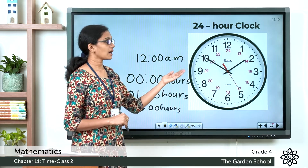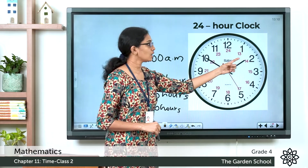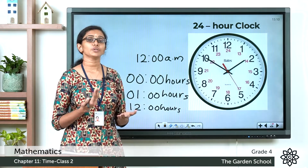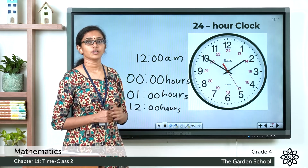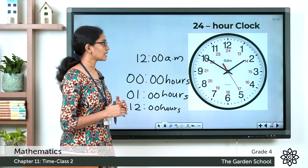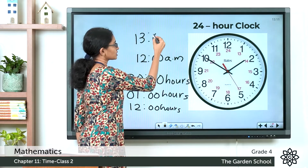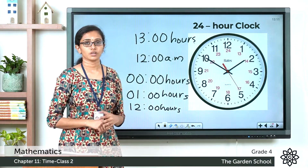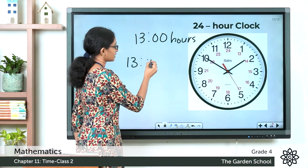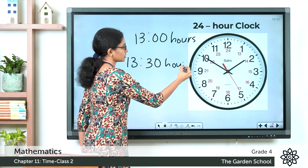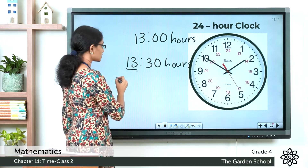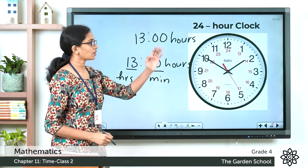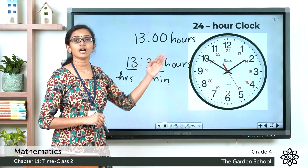After 12 noon, we count the hours as 13, 14, 15, 16 and so on till 24. So how would you represent 1 o'clock in the afternoon on a 24-hour clock system? It will be represented as 1300 hours. If it is 1:30 in the afternoon, we write 1330 hours. The first part represents the hours and the second part represents the minutes.